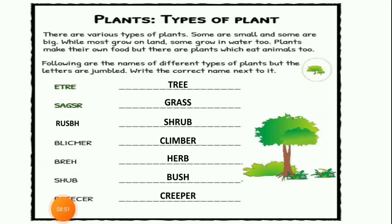So we have completed this exercise. The types are: tree, grass, shrub, climber, herb, bush and creeper. All these types we have learned in the previous videos. That was the easy worksheet. Now we will do the next worksheet.